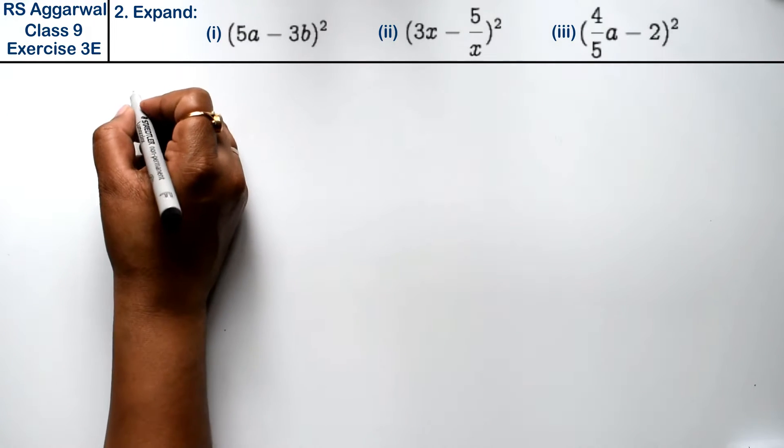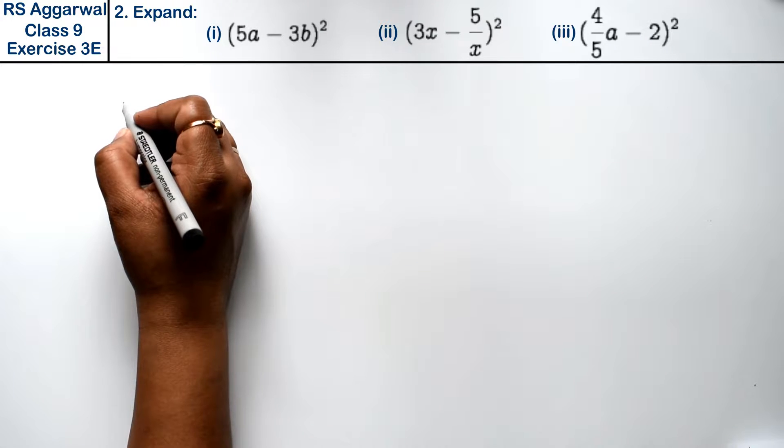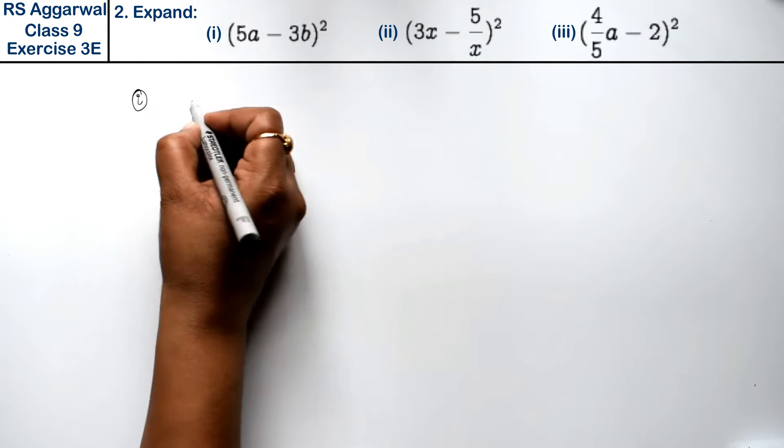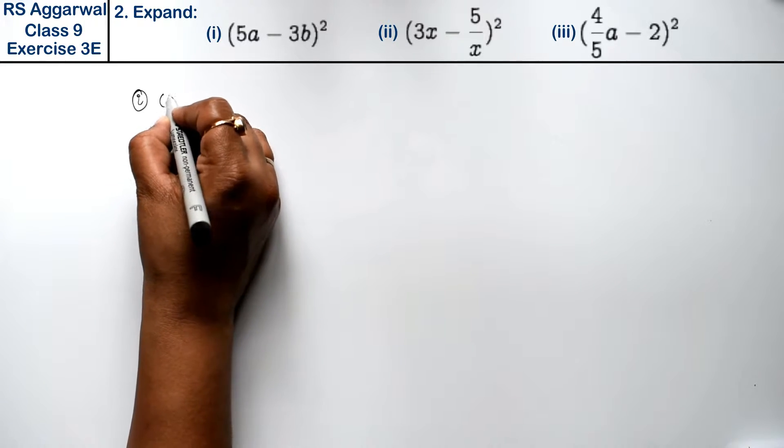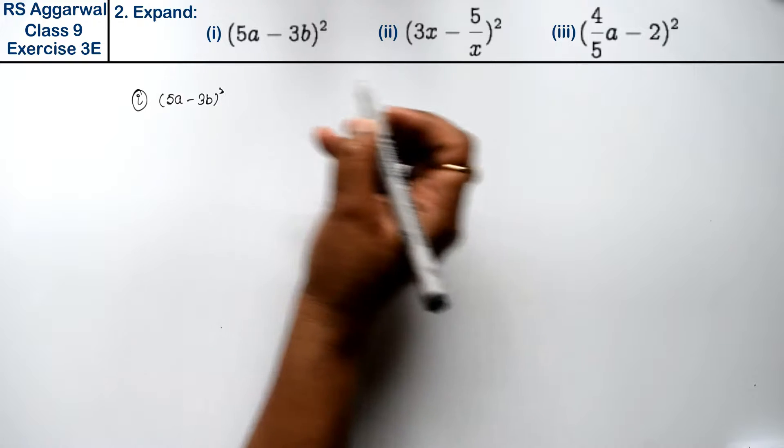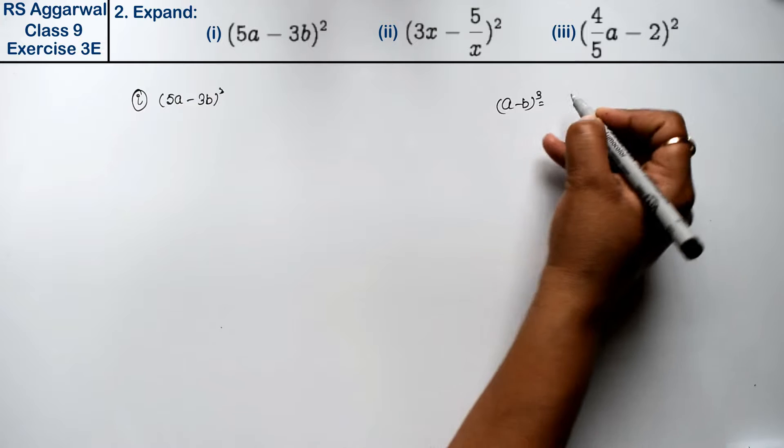Let's do question number 2 of exercise 3E, that is factorization of polynomials. Question number 2 is expand. First part is (5a - 3b) whole cube. Friends, (a - b) whole cube ka formula hota hai: